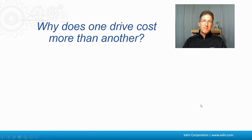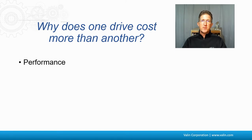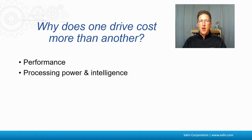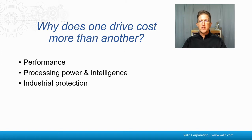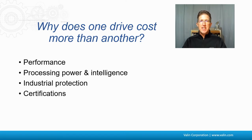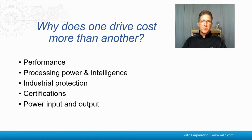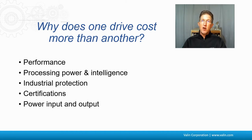Why does one drive cost more than another? There's performance — some drives have more processing power, more intelligence, faster processing, and more industrial protection from mains filtering, I/O protection, vibration, or temperature protection. They may carry certifications like CE and UL. Then there's power input and output: a drive that takes in 120V AC is more expensive than one that takes in 24V DC because it needs an internal power supply. A drive that handles 460V or outputs 20 amps is more expensive than one outputting 2 amps. The power supply, capacitors — it all factors into cost.